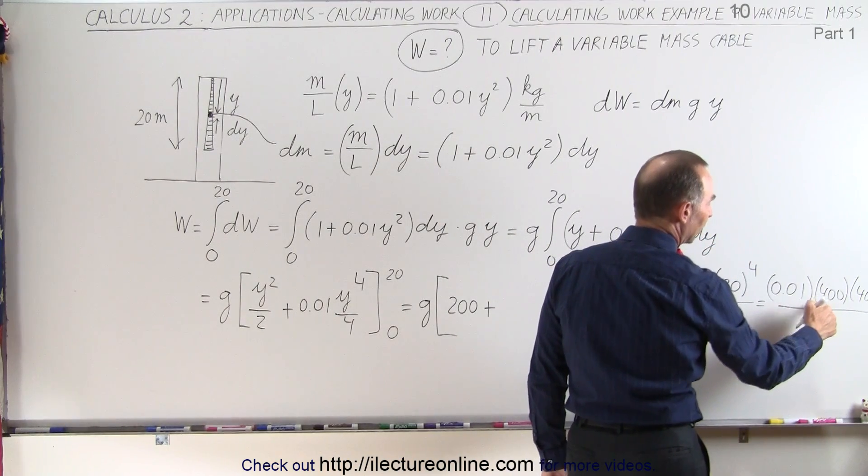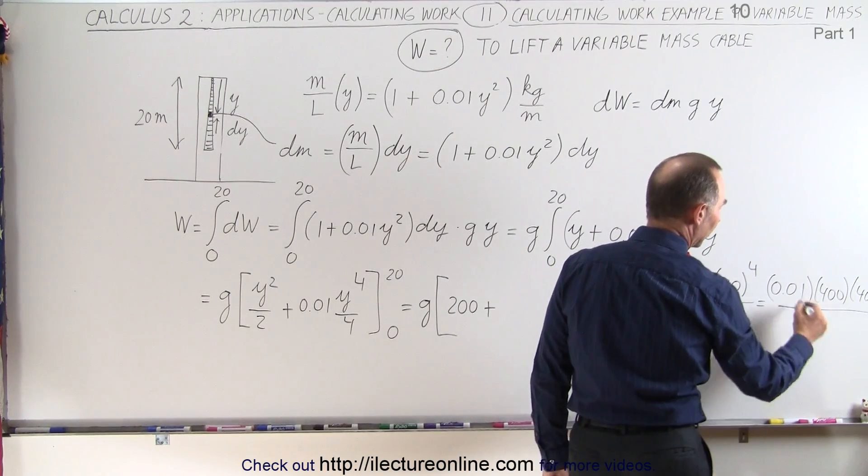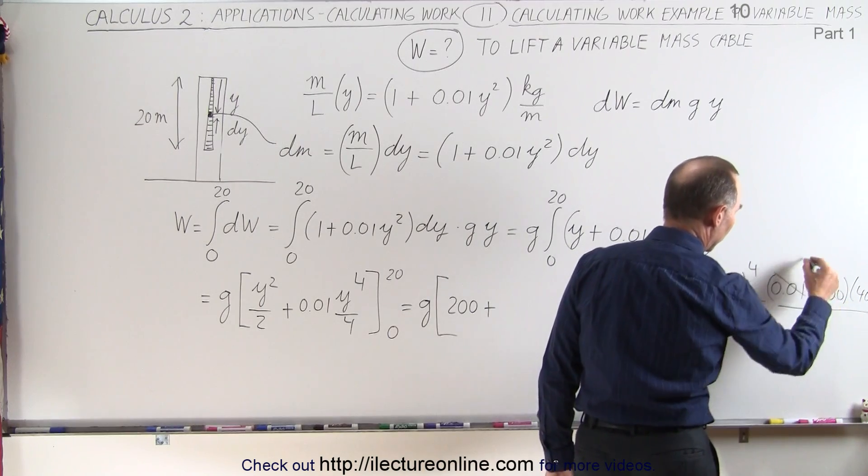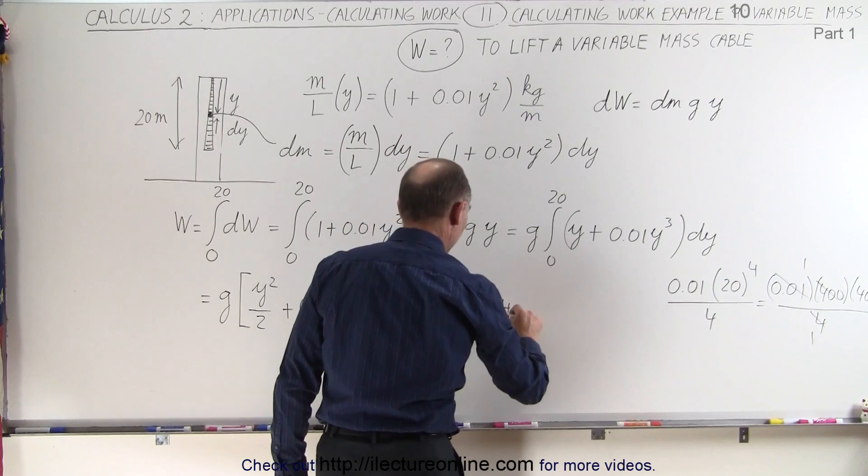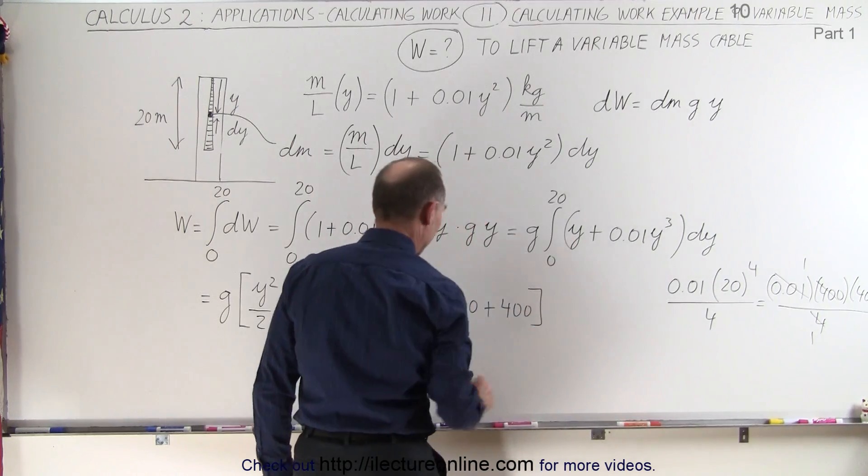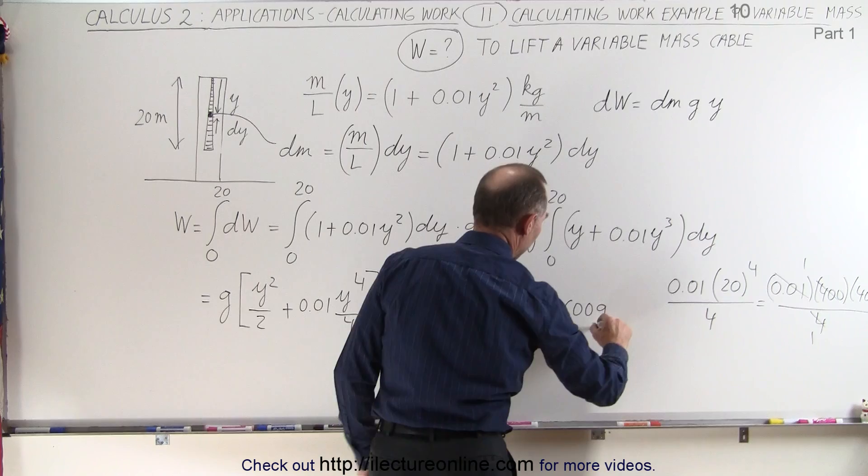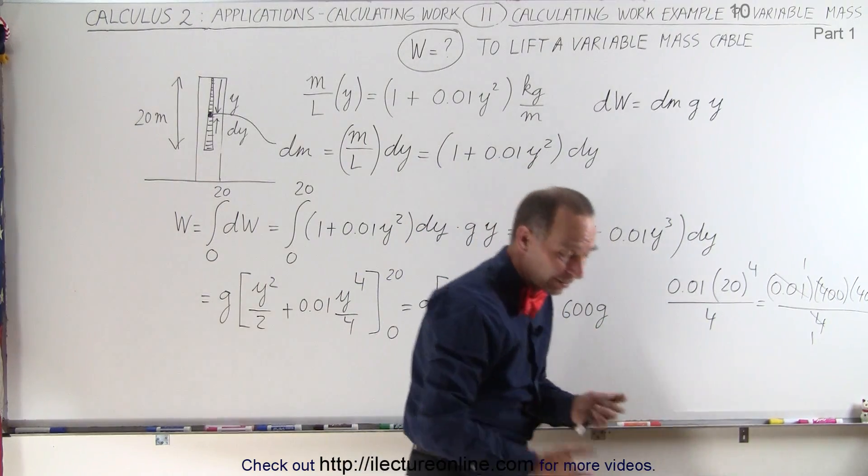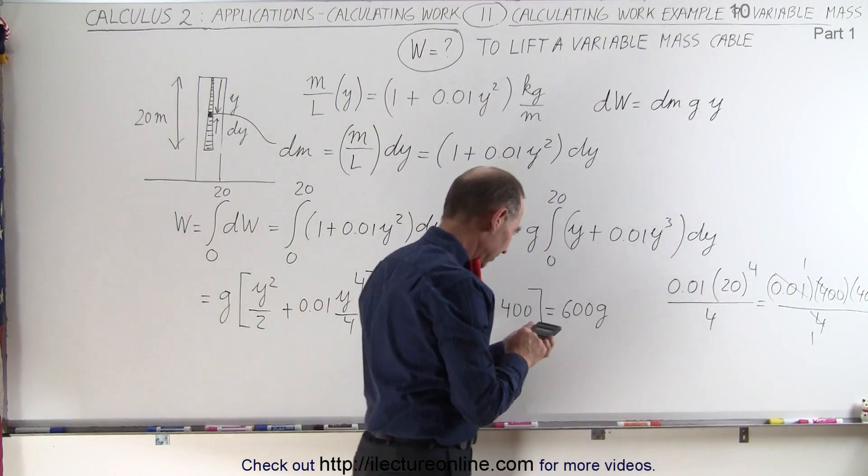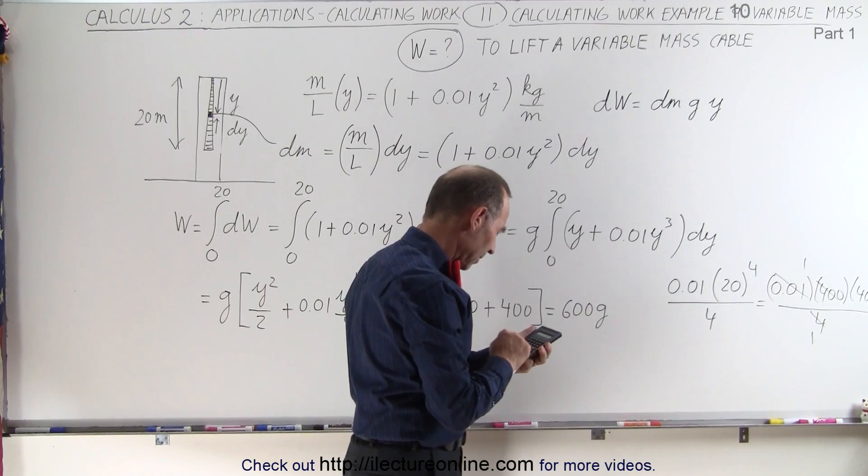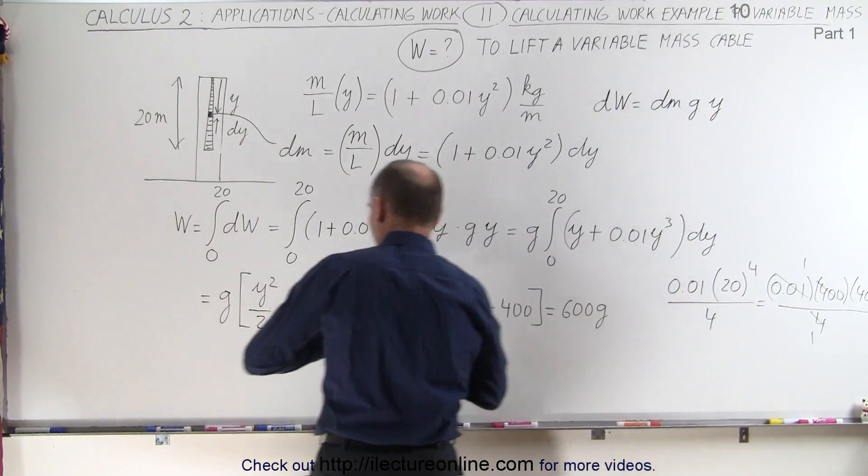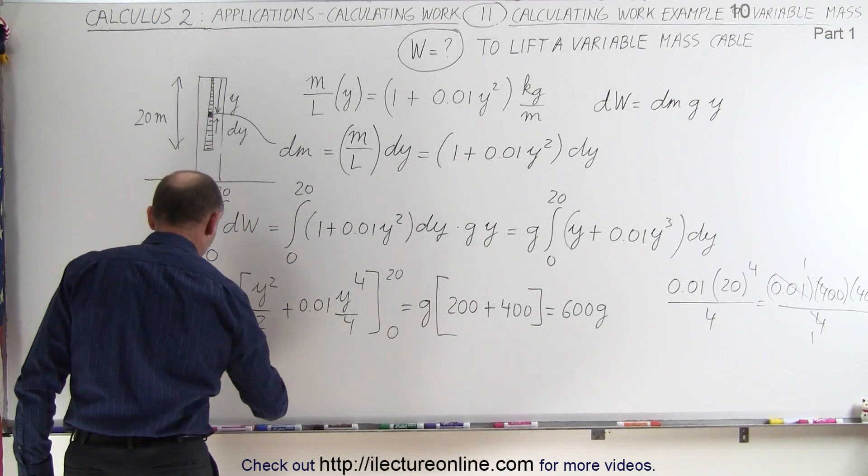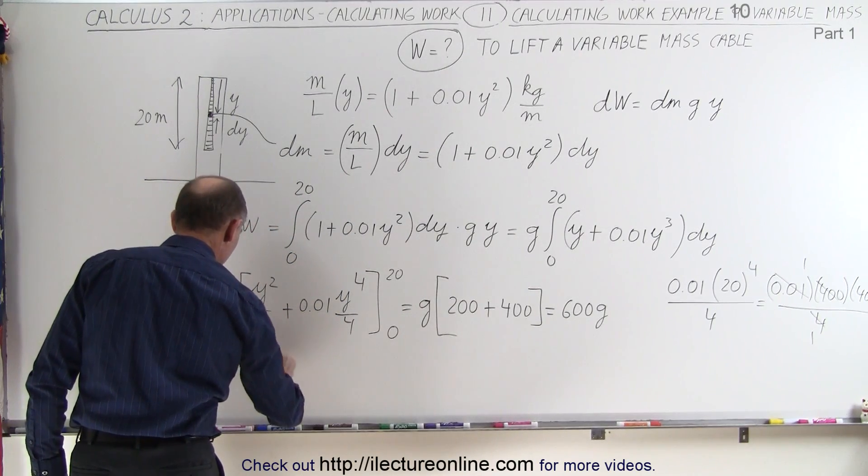Now 0.01 times 400 is 4, and 4 divided by 4 is 1. So this all cancels out to be 1. And then we have times 400, so that would be 200 plus 400. And so therefore this becomes 600g. And since g is 9.8, we get 600 times 9.8 equals 5,880 joules. 5,880 joules.